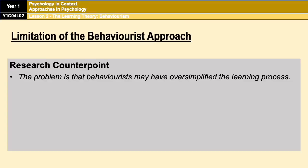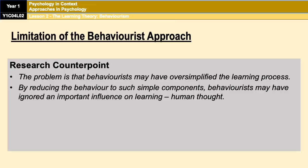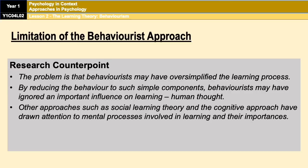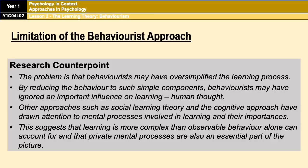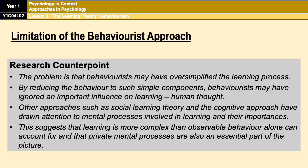However, a counterpoint is that behaviourists oversimplify the learning process. They reduce behaviour to very simple components and ignore an important influence on learning: human thought. Other approaches, such as social learning theory and the cognitive approach, draw attention to mental processes that are involved. For example, just because I've learned a behaviour through reward doesn't necessarily mean I will carry it out, because I may choose not to — whereas behaviourists say if you've learned it, you'll do it. This suggests learning is far more complex than observable behaviour alone can account for.